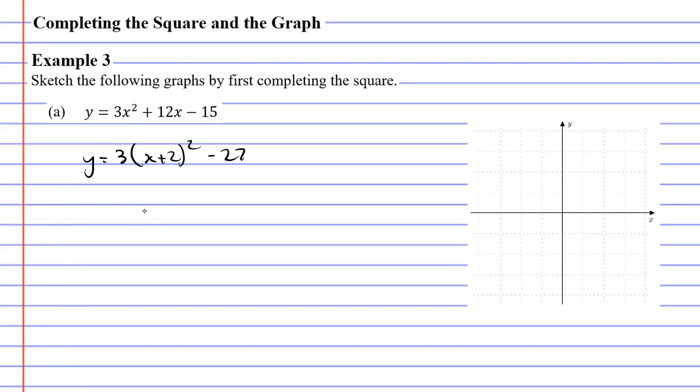Our function is now in the form a(x - h)² + k. We can see that a equals 3 and h equals negative 2 because minus negative 2 is the same as plus 2 and we can see that k equals negative 27 meaning that our vertex is the point negative 2, negative 27. That's because the vertex is taken from our h and k values.